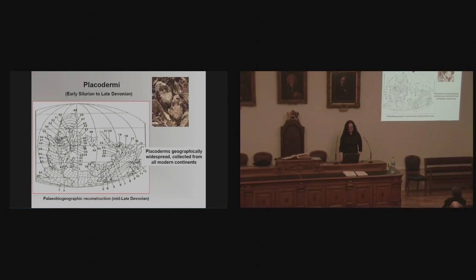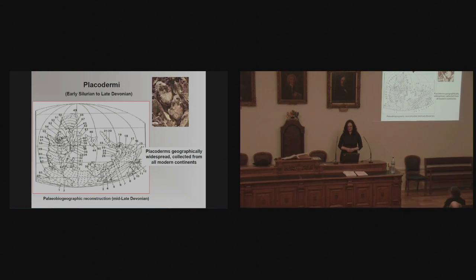Here's a reconstruction of a mid to late Devonian scene with placoderms swimming in that region. Placoderms were very successful, ranging in age from the Silurian to the Devonian. Here we have a paleogeographic reconstruction with numbers representing placoderm localities. Placoderms were very widespread geographically, collected from all modern continents including Antarctica. They were very widespread, very morphologically diverse, but went extinct at the end of the Devonian.